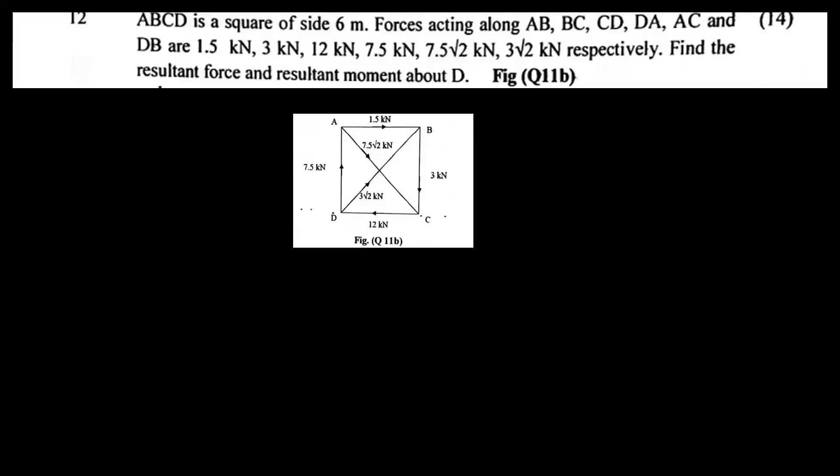ABCD is a square of side 6 meters. Forces acting along AB, BC, CD, DA, AC, and DB are 1.5 kN, 3 kN, 12 kN, 7.5 kN, 7.5 kN, 7.5 kN, and 3 kN respectively. Find the resultant force and resultant moment about D.